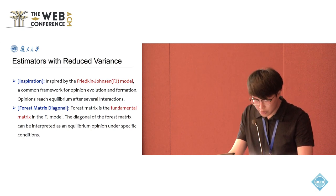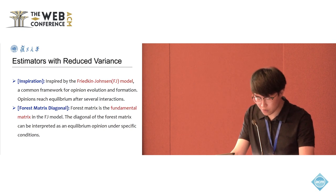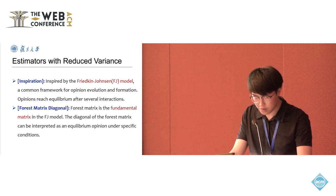The forest matrix plays a crucial role in the FJ model, where the diagonal elements can be seen as the stabilized opinions of agents under certain conditions.